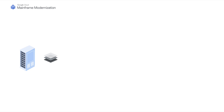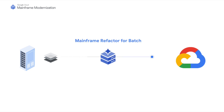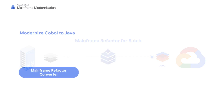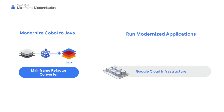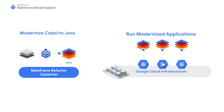Google Cloud Mainframe Refactor allows for automated refactoring of mainframe applications to Java, ensuring that the original functionality of the mainframe application is retained as it is modernized. Mainframe Refactor includes a development environment and specialized libraries enabling automated code conversion to Java and supporting the modernized application.